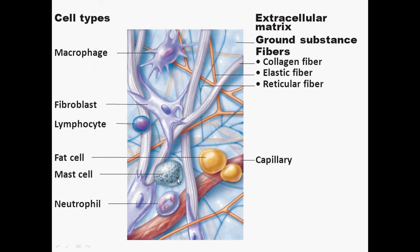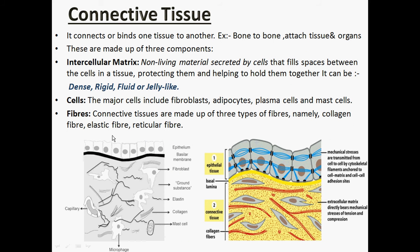As we have studied, connective tissue comprises three main components: the intercellular matrix, the cells, and the fibers. The intercellular matrix is a non-living material secreted by the cells that fills the space between cells in a tissue, helping to protect and hold them together. The matrix can be dense, rigid, fluid, or jelly-like depending on the type of connective tissue. For a fluid connective tissue such as blood, the matrix will be fluid or jelly-like, while a dense or rigid matrix characterizes skeletal connective tissue, or dense regular connective tissue as in tendons and ligaments.